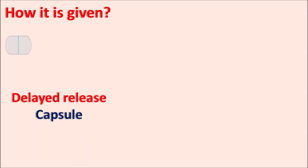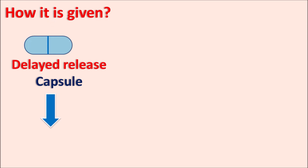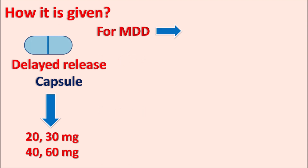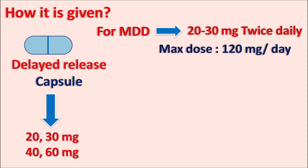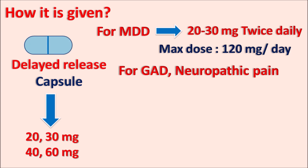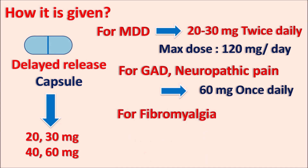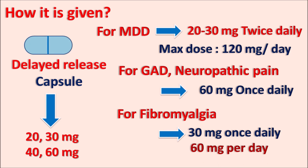How is it given? This drug is available as a delayed-release capsule in strengths of 20 mg, 30 mg, 40 mg, and 60 mg. The dose depends on the clinical indication. For major depressive disorder, the starting dose is 20 to 30 mg twice daily, meaning 40 to 60 mg per day, with a maximum of 120 mg per day. For generalized anxiety disorder and neuropathic pain, the initial dose is 60 mg once daily. For fibromyalgia and other musculoskeletal disorders, the initial dose is 30 mg once daily, which may be increased up to 60 mg per day. In all these conditions, 60 mg per day is generally the effective suitable dose.